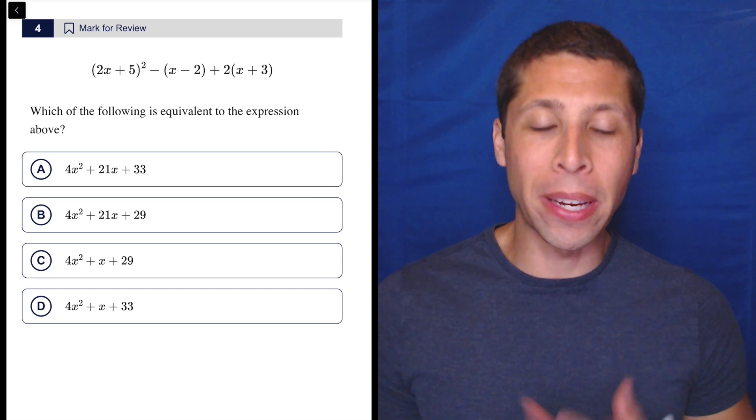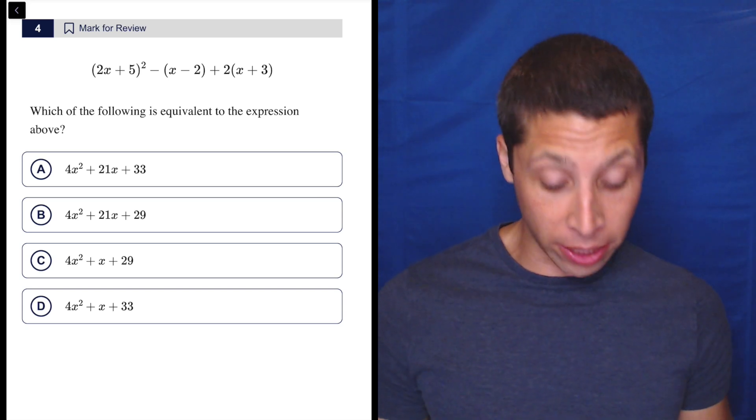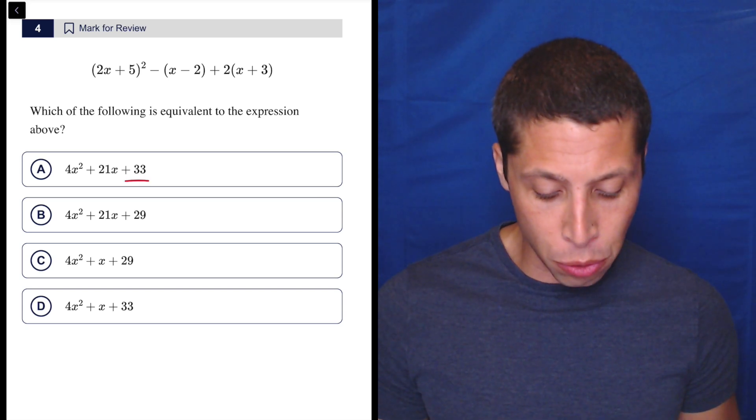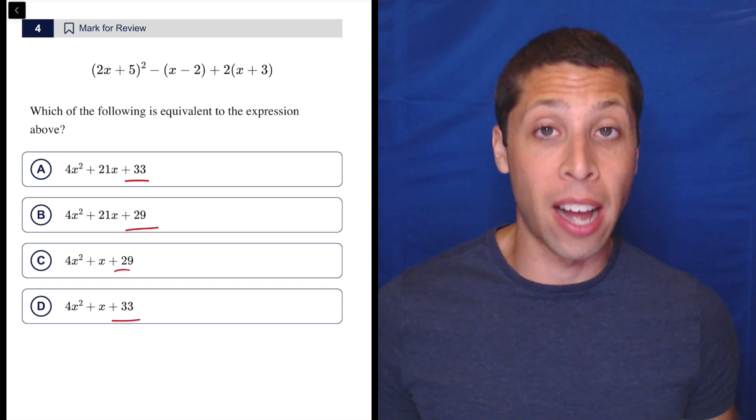For a question like this, I know that picking zero is not going to work out. I can look at the answers. I can see that I have two 33s and two 29s.